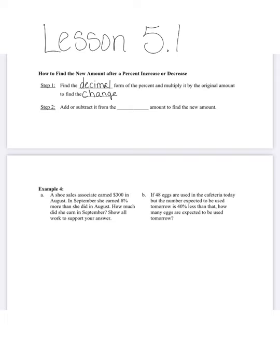And then to find the new amount, step two, we are going to add or subtract it. Keyword there is or. We're going to add or subtract it from the original amount. So we would add it in a situation in which it is a percent increase, and if it was a percent decrease, we would then subtract that from the original amount. So let's take a look at Example 4 and do some of these problems following these steps.